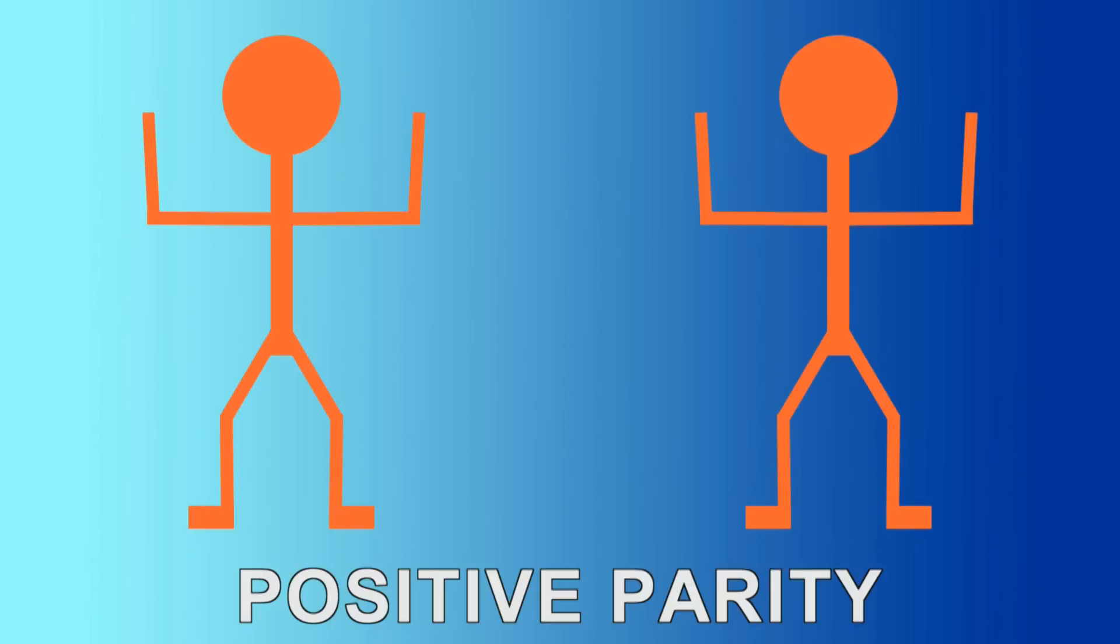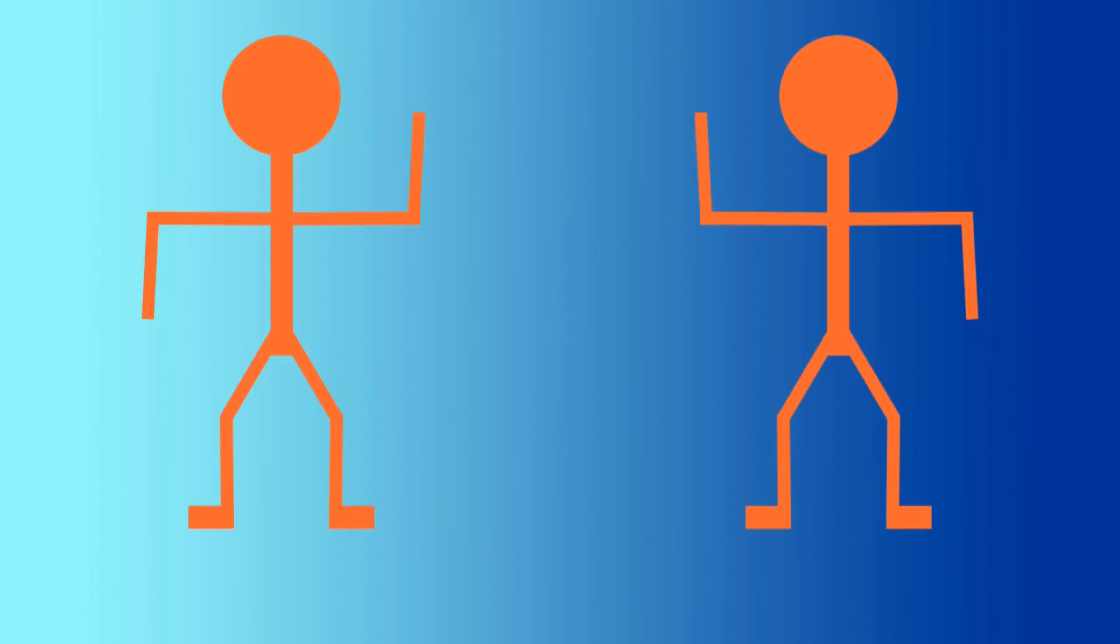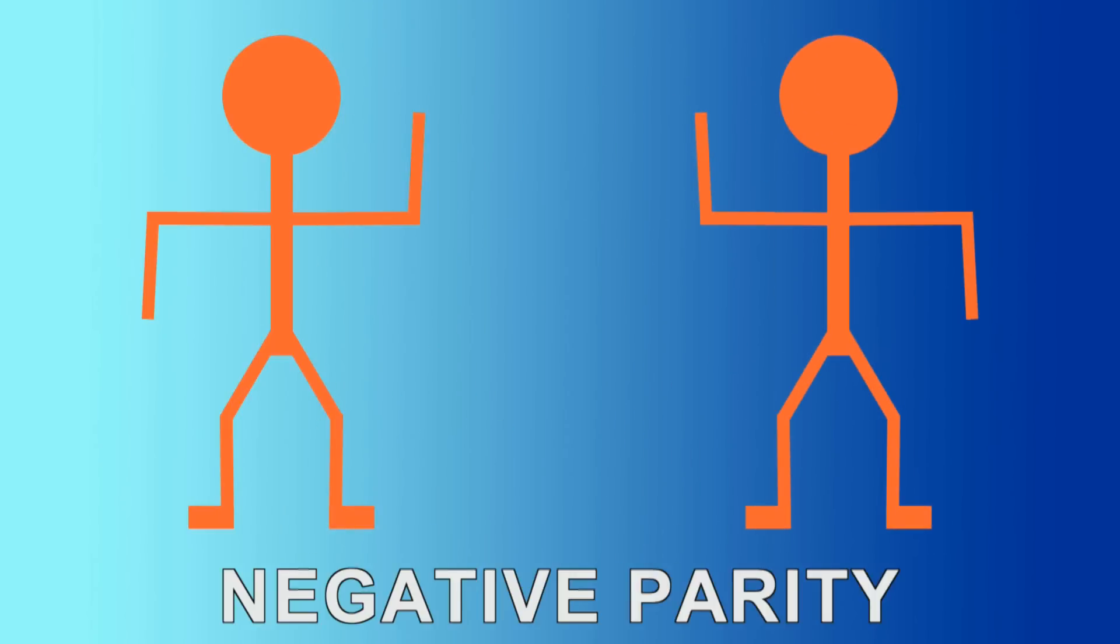As an illustration, we see a simplified version of parity here, when you swap just left and right. If when you swap the two, it doesn't look very different, this is positive parity. If when you swap the two, it looks just the opposite, then this is negative parity.